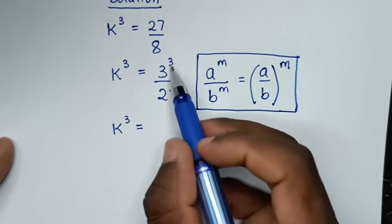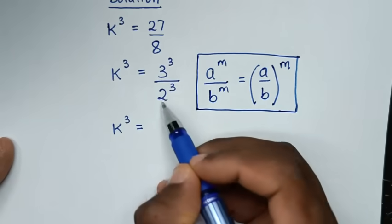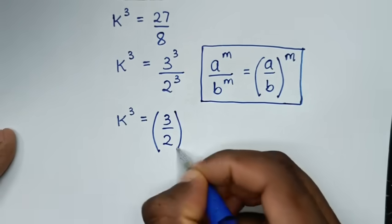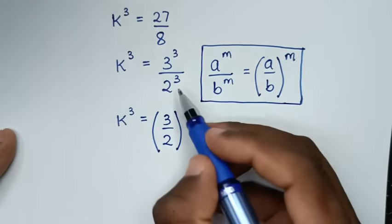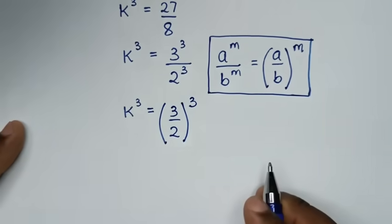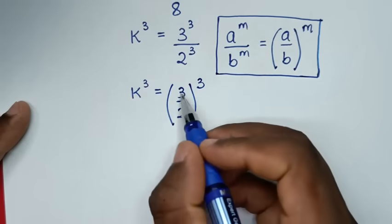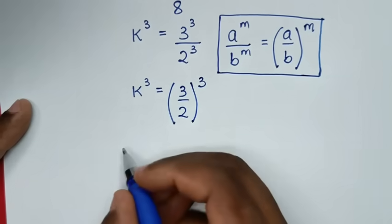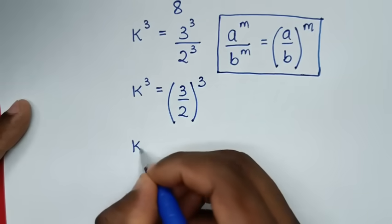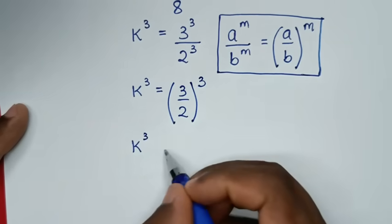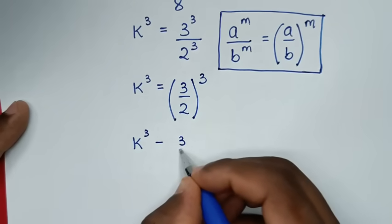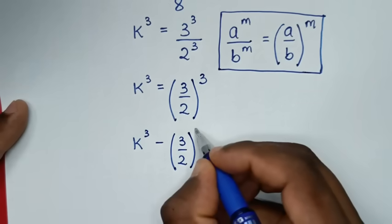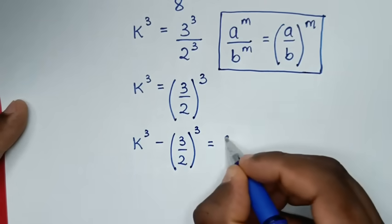We have a common power of 3, so it will be 3 over 2, raised to the power of 3. Then, taking the right side to the left, it becomes k power 3 minus (3 over 2) power 3 is equal to 0.